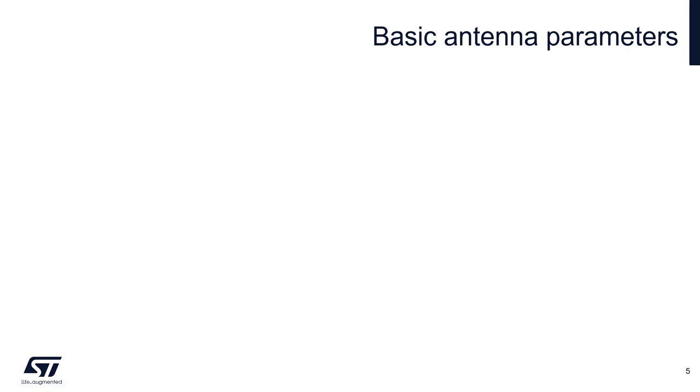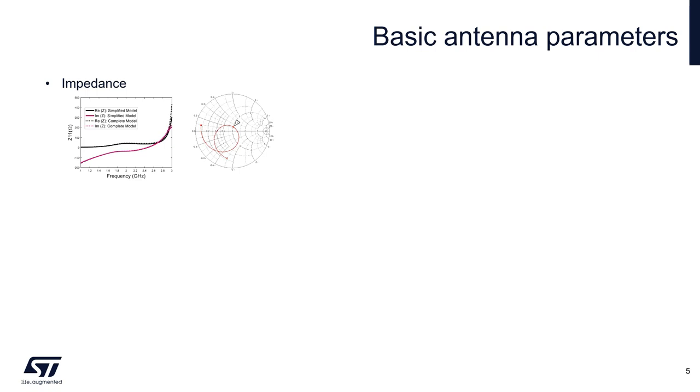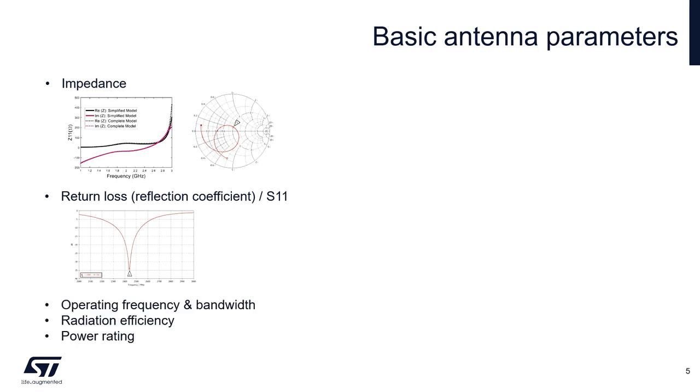There are many antenna parameters. The basic ones are impedance - what impedance a transmitter or receiver can see; return loss - what portion of energy is reflected back from the antenna port. If the energy is not reflected then it is radiated. Next parameters are operating frequency and bandwidth, radiation efficiency, and power rating - important mainly for transmitter antennas.